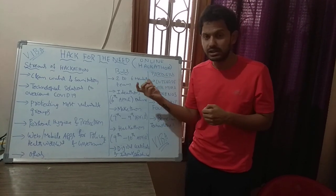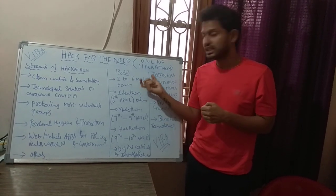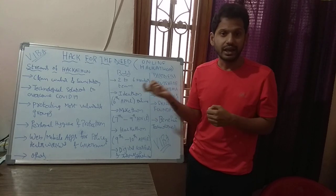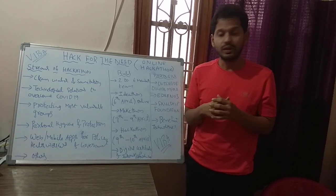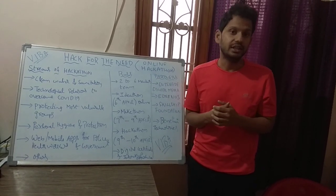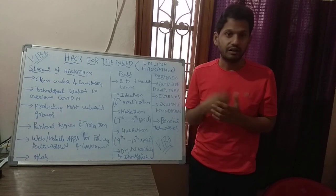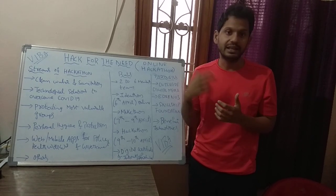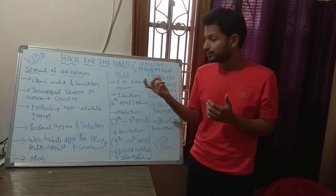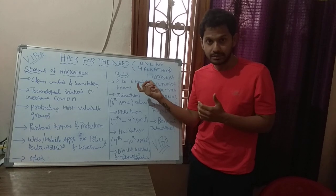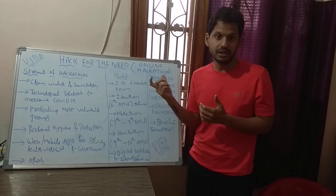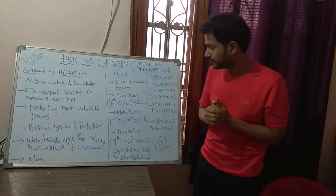Coming to team members, 2 to 6 members can be in a team. In this 2 to 6 members, you can also involve your faculty — 1 or 2 faculty members can be included. So the team should comprise of 2 to 6 members, which may include 1 or 2 faculty.